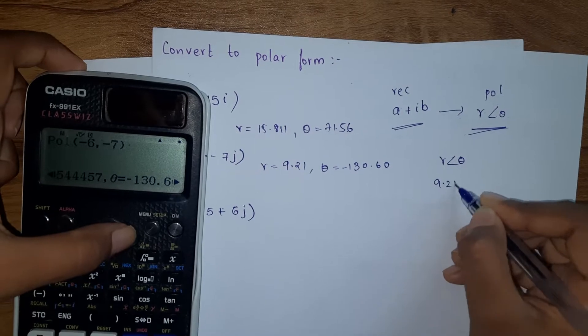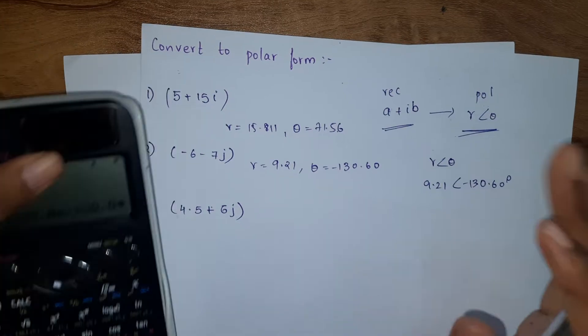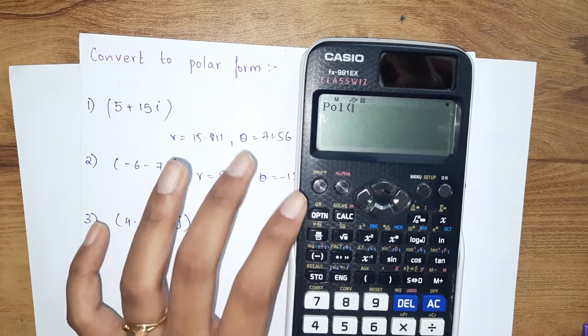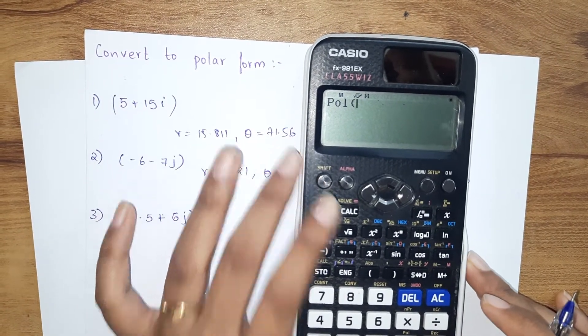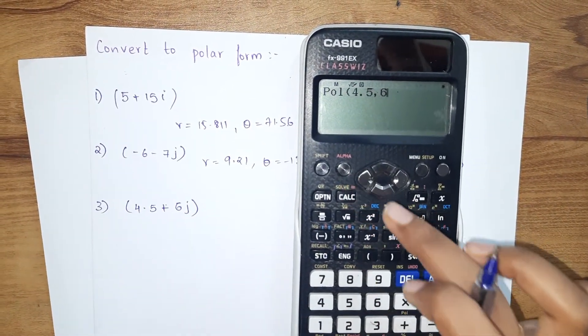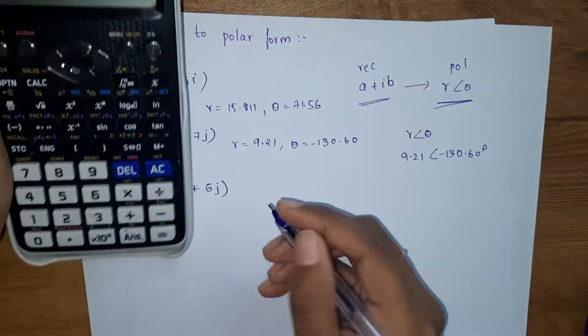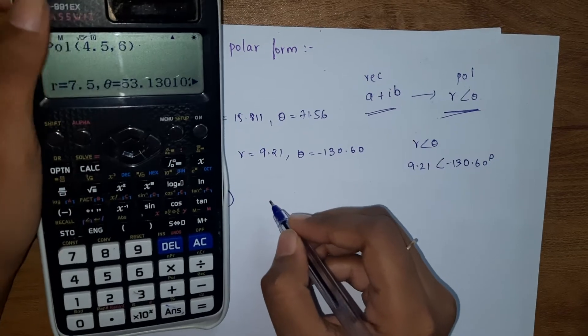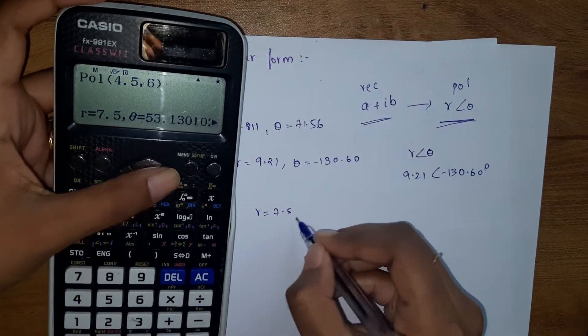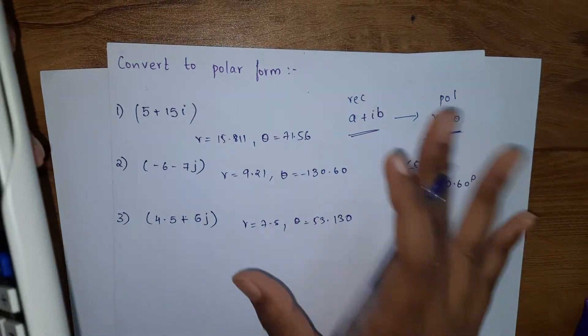Another question: shift pole. The question is 4.5, shift comma, 6. So that equals - r is equals to 7.5 and theta is 53.130 degrees.